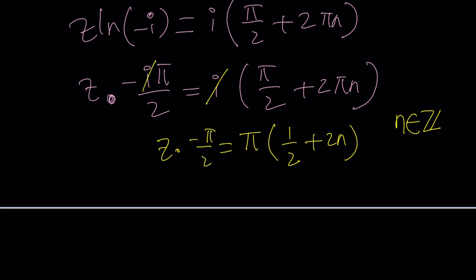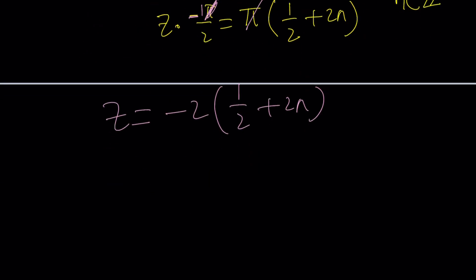Now, z is multiplied by negative pi over 2. And now the pi is going to cancel out. And guess what we're going to do? We're going to multiply both sides by negative two. z is going to be negative two times one half plus 2n. And guess what that's going to give us? z equals, I would like to write this first, negative 4n minus 1, where n is an integer. What is that supposed to mean?